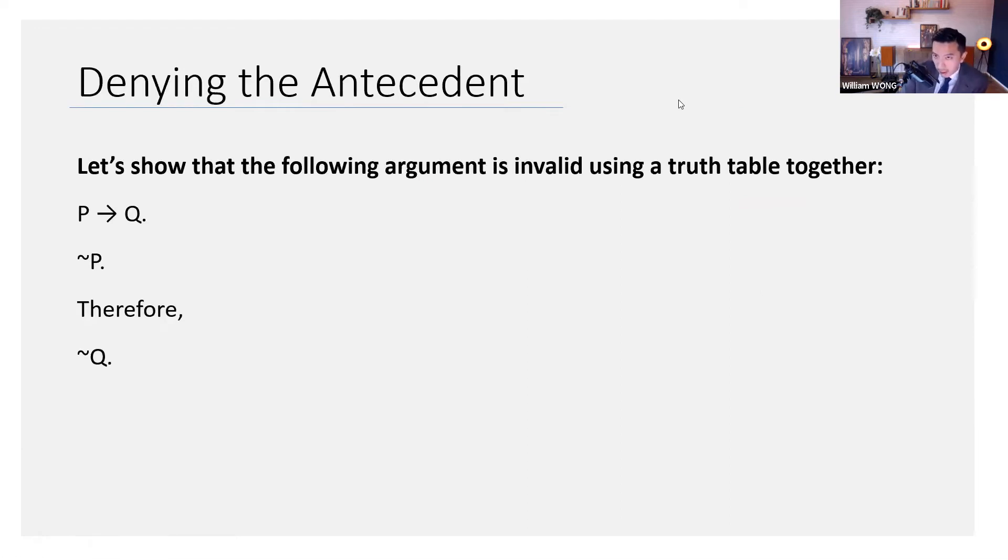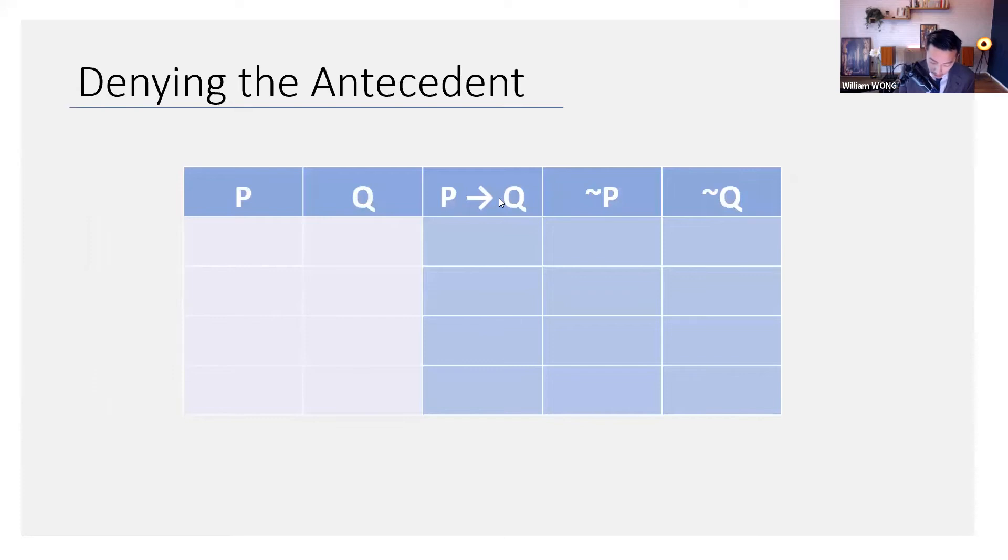So what can we do to show that this argument is invalid? Well, in addition to symbolizing it, we can use a truth table. And we've done this many times before. So here is the argument symbolized. We can then plot it on a truth table. And I'll do this for you very quickly. First thing you want to do is fill in the atomics.